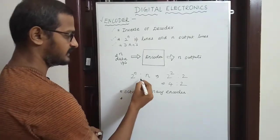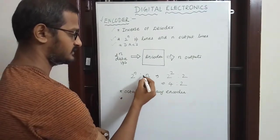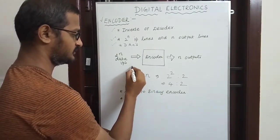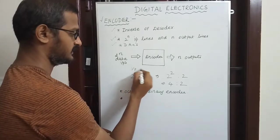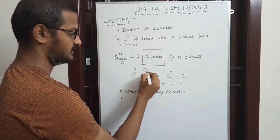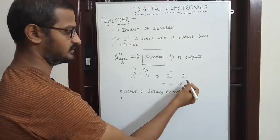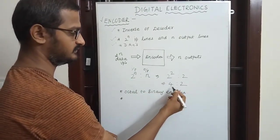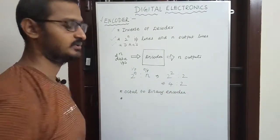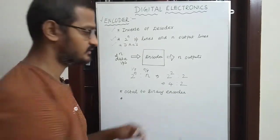So let's say 2 to the power of N: N is the number of outputs and 2^N is the number of inputs. For example, 2 to the power of 2 gives 2 outputs and 4 inputs — that is a 4-to-2 encoder.